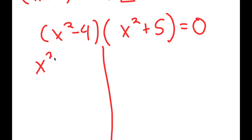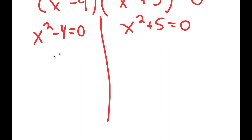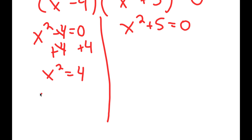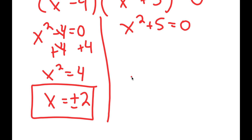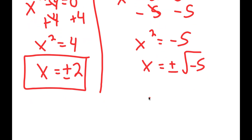This gives me two equations. I get x squared minus 4 is equal to 0, and x squared plus 5 is equal to 0. For x squared minus 4 equals 0, I add 4 on both sides to get x squared equals 4, so x equals positive or negative 2. For x squared plus 5 equals 0, I get x squared equals negative 5, so x equals positive or negative the square root of negative 5, which is positive or negative square root of 5 times i.